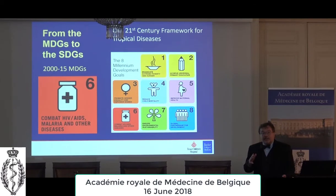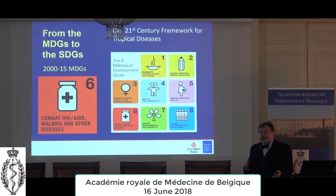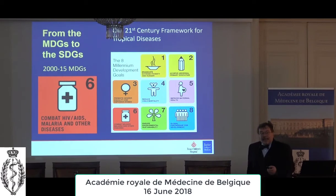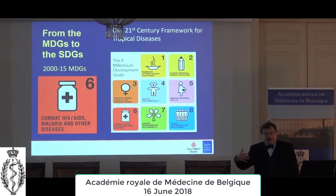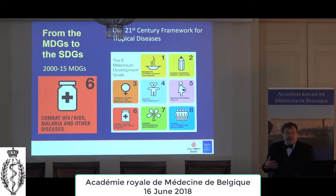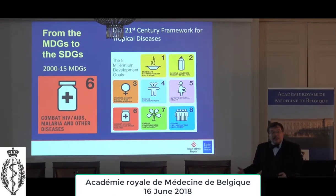The key idea, which seems obvious now but was different at the time, was that health and disease not only occur in the setting of poverty but also cause poverty. Goal number six — to combat AIDS, malaria, and other diseases — launched the Global Fund to fight AIDS, tuberculosis, and malaria, and on the U.S. side, the President's Emergency Plan for AIDS Relief. For AIDS and malaria in particular, it had enormous consequences.